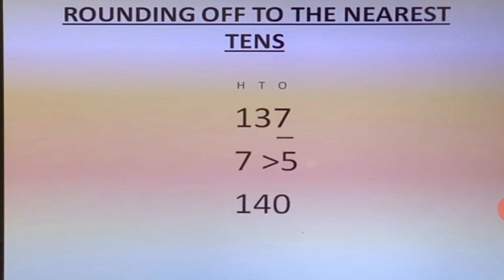We check whether this number is five, greater than five, or less than five. Seven is greater than five. So if the number is greater than five then we add plus one to the number at which we have to round off. Here we round off at tens place and the number at tens place is three, so three plus one is four. The number to the right of tens place will remain zero, and the number to the left of tens place will remain the same. So the answer is one hundred forty.